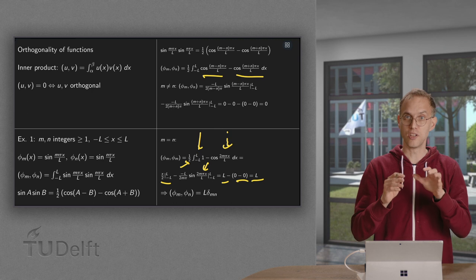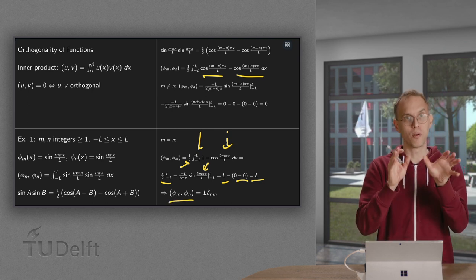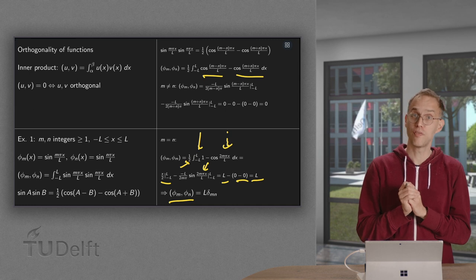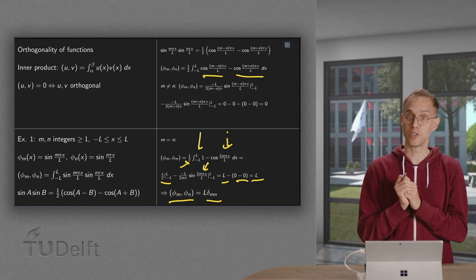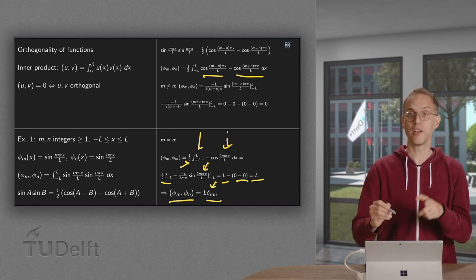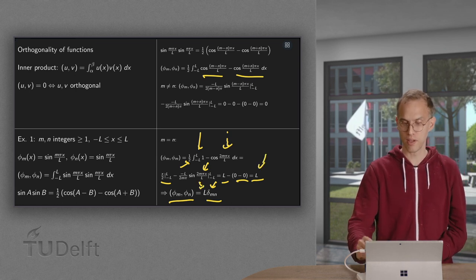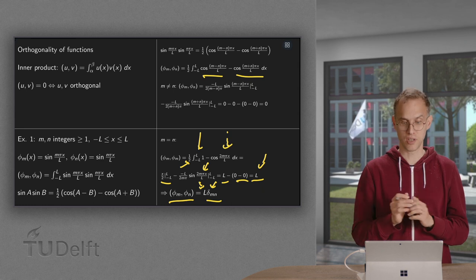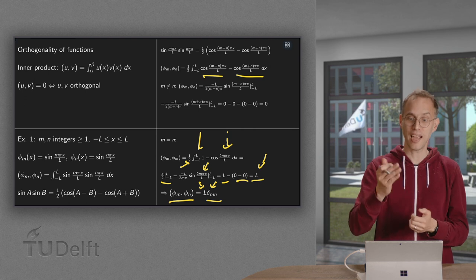That means that we can summarize this as: the inner product of phi_m with phi_n equals l times delta_mn. Zero if m is not equal to n, and delta_mn equals 1 if m equals n. And then we have the additional factor of l to get the correct constant. That is how we can summarize the inner product between phi_m and phi_n.